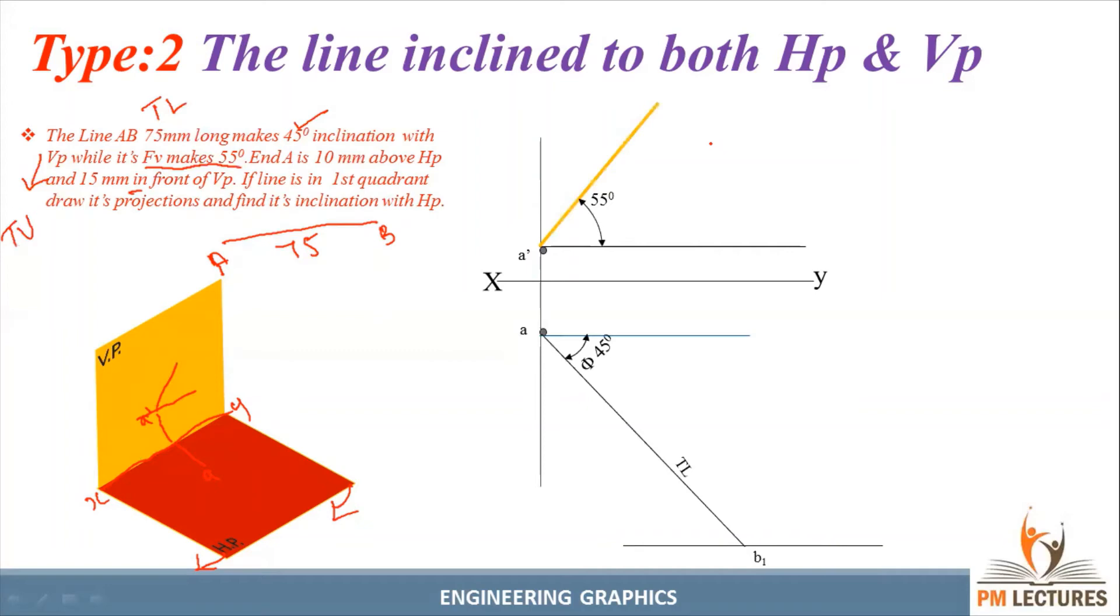This is the horizontal line, the locus of B, locus of A, and locus of A dash. This is the front view line. Extend the line from A dash. From that point level, make an arc. Where the locus of B dash intersects, mark that point as B dash.